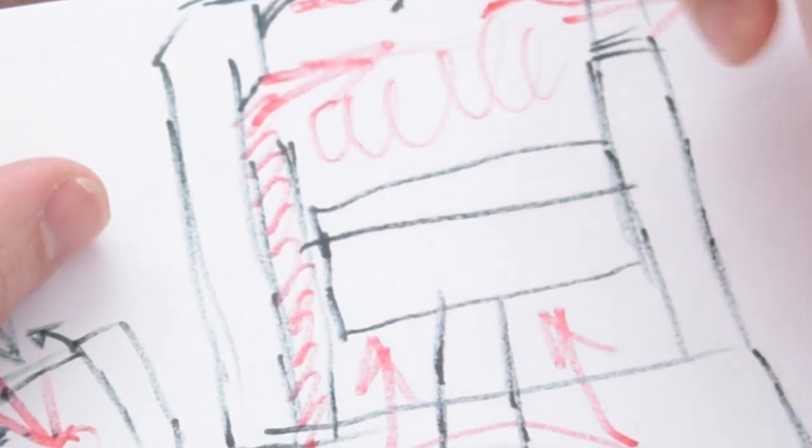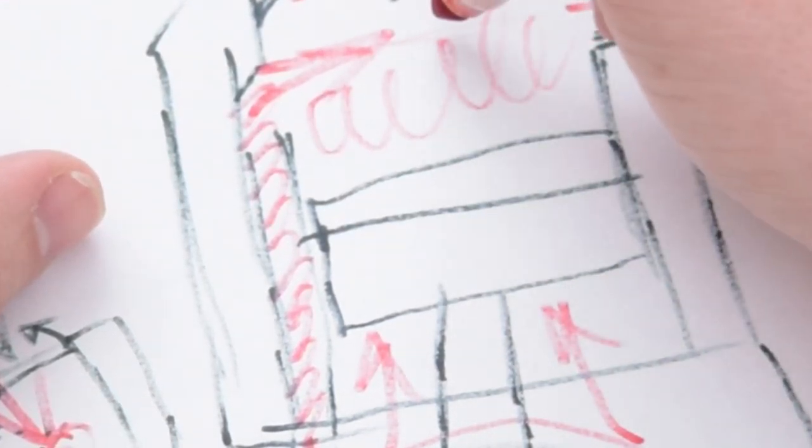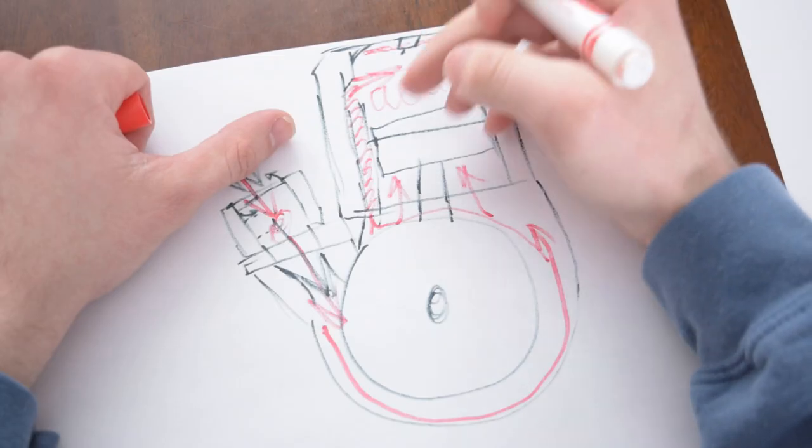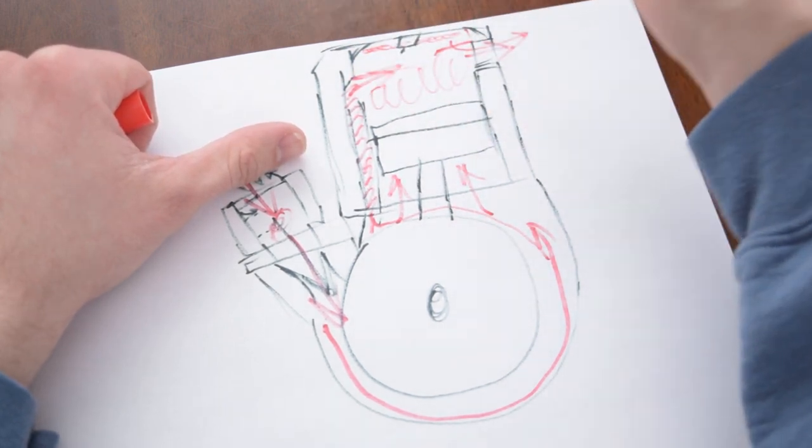So then exhaust gasses start to come out the exhaust port and then a little bit farther it moves past the opening of the transfer port here. Now that fresh mix comes in, pushes the last of the exhaust gas out and then starts to fill the cylinder again and repeat. Moves back up, boom, make sense?